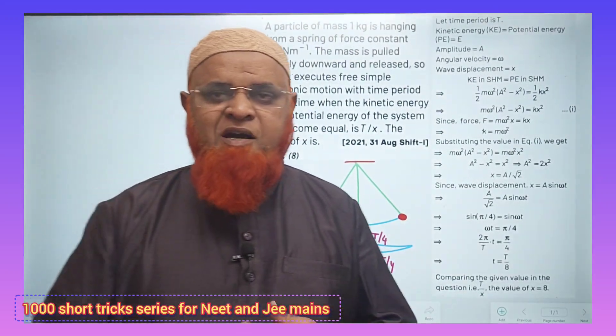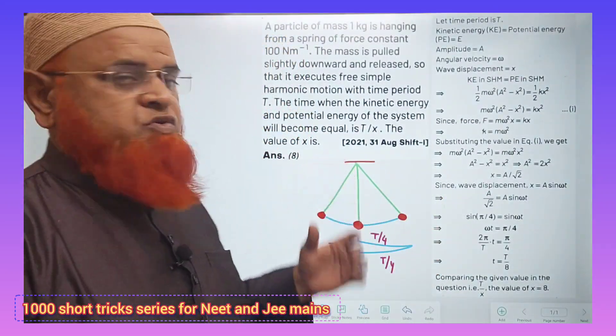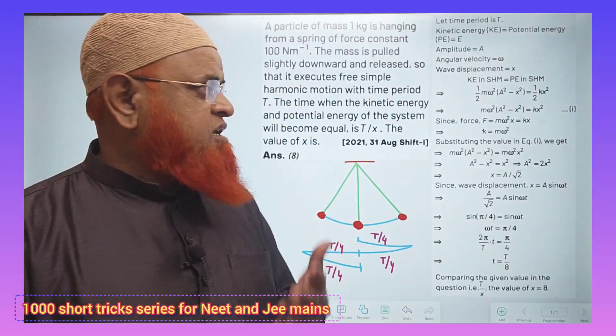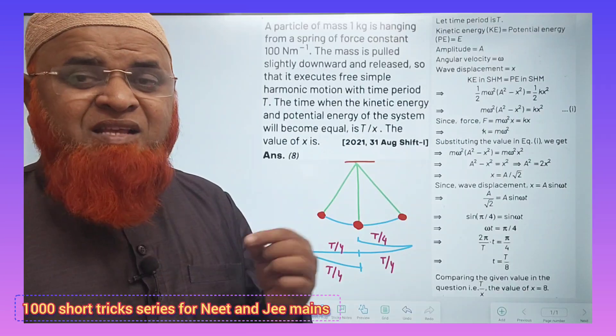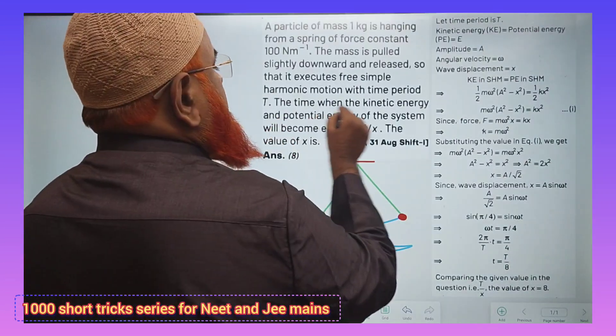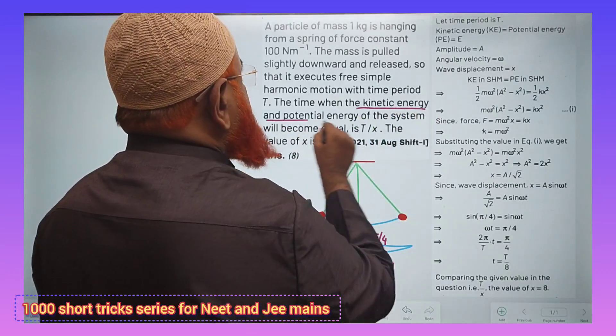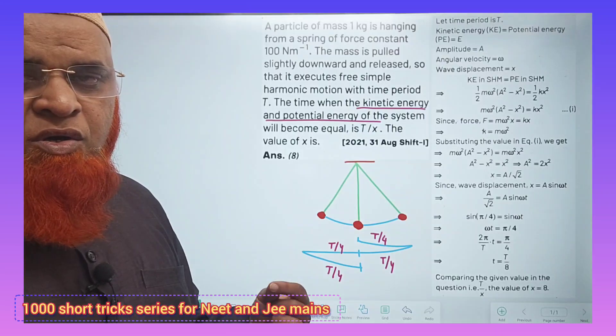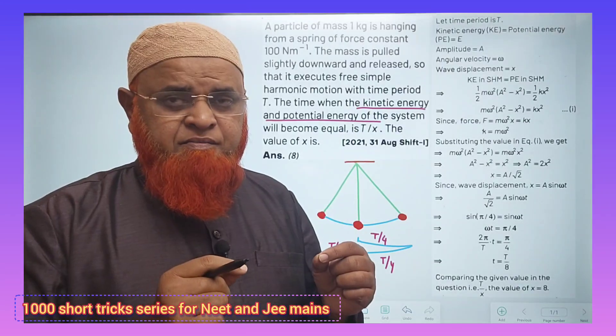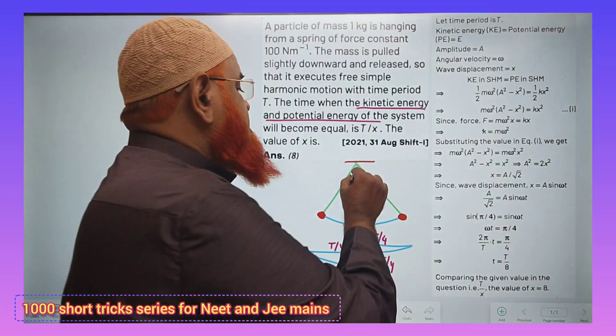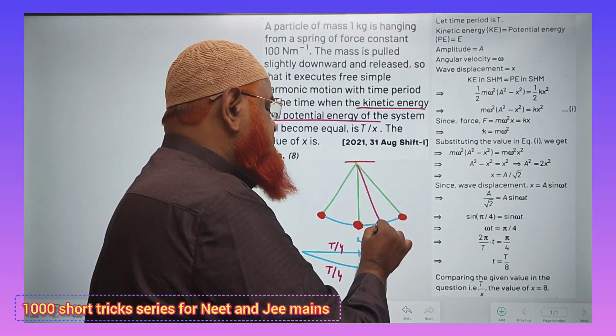My dear students, how can you solve this problem asked in JEE Mains 2021? It is an integer type question. It is said that kinetic energy and potential energy of a system are equal. Find the time from the mean position where, at this place, let us imagine